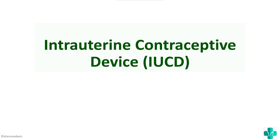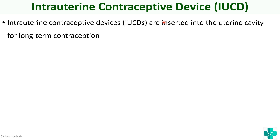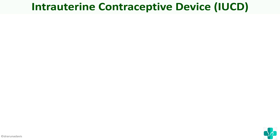This will be useful for exams when a short note comes from this topic. Intrauterine contraceptive devices — just as the name suggests, they are intrauterine, meaning kept inside the uterus, and they help in contraception. IUCDs are inserted into the uterine cavity for long-term contraception. This is how an IUCD looks — a T-shaped structure kept inside the uterus to provide long-term contraception.